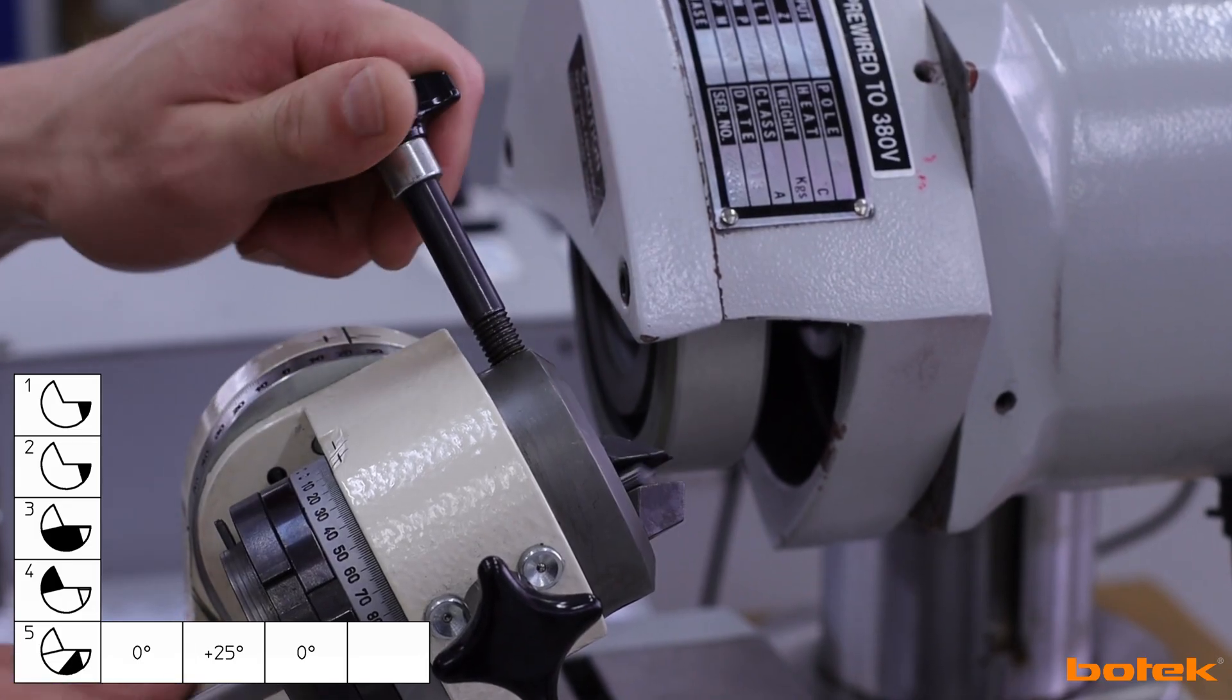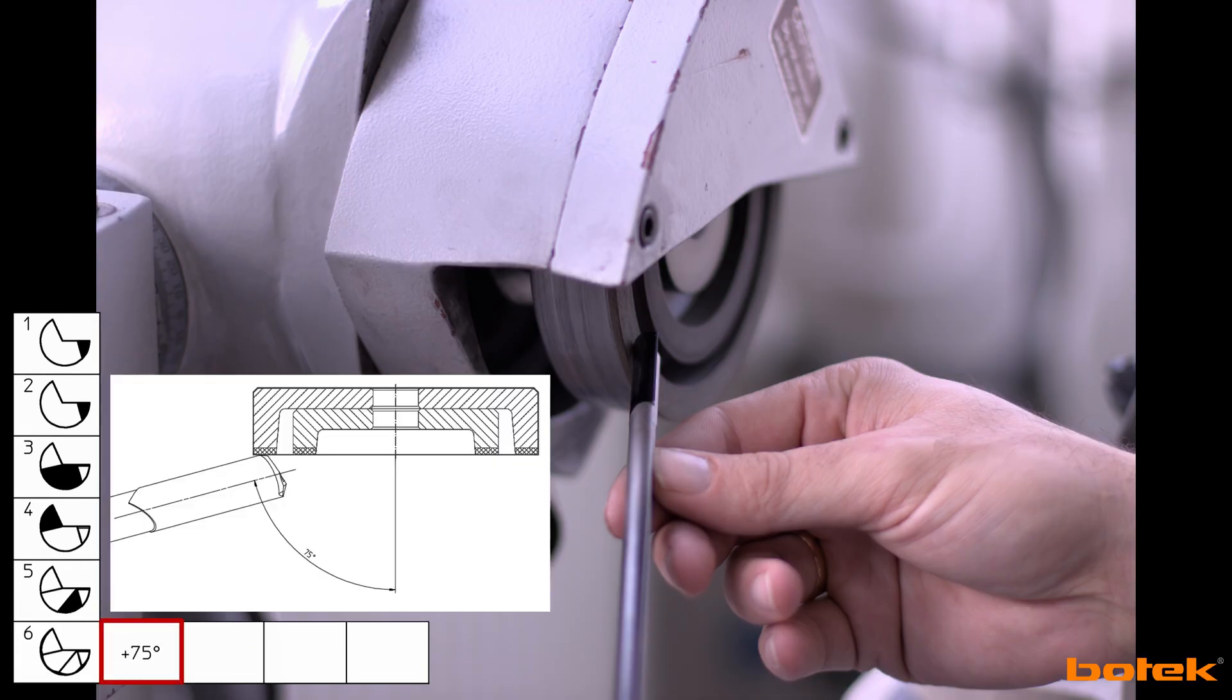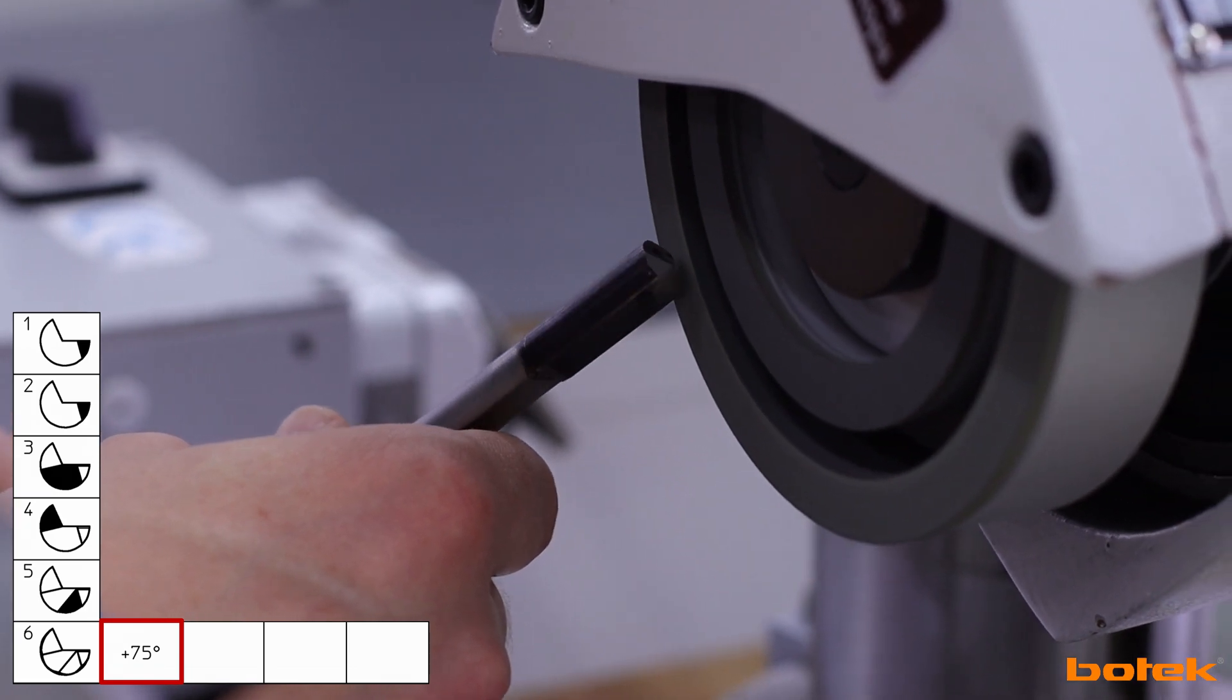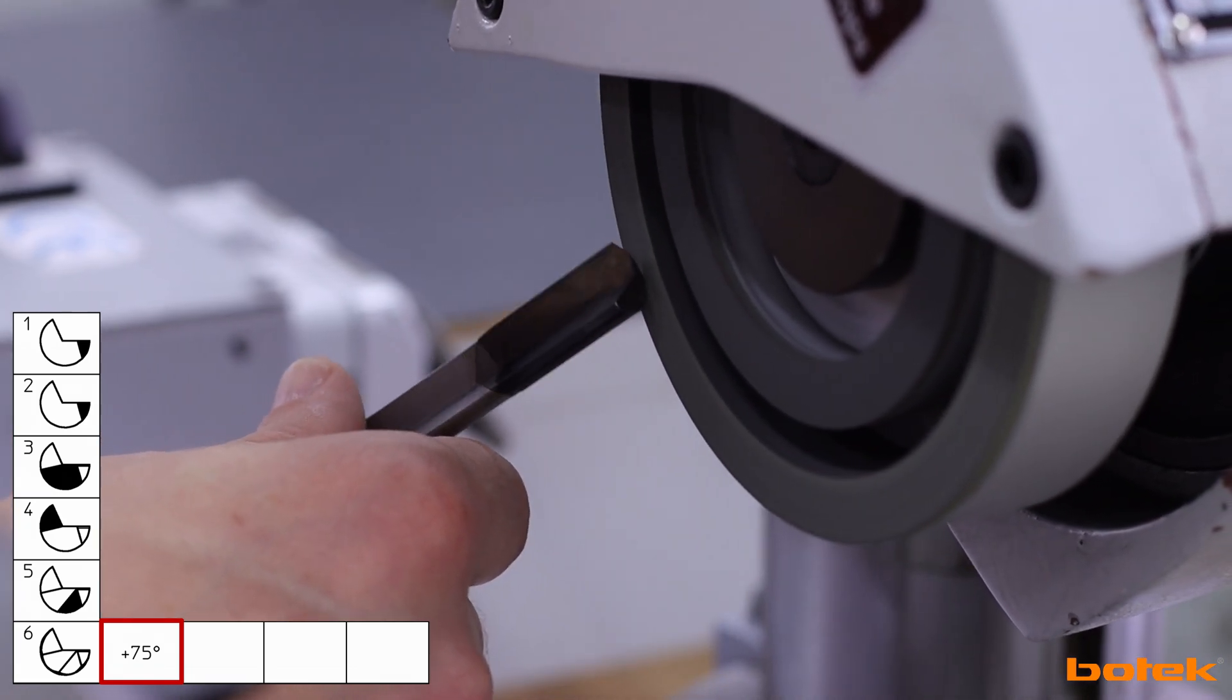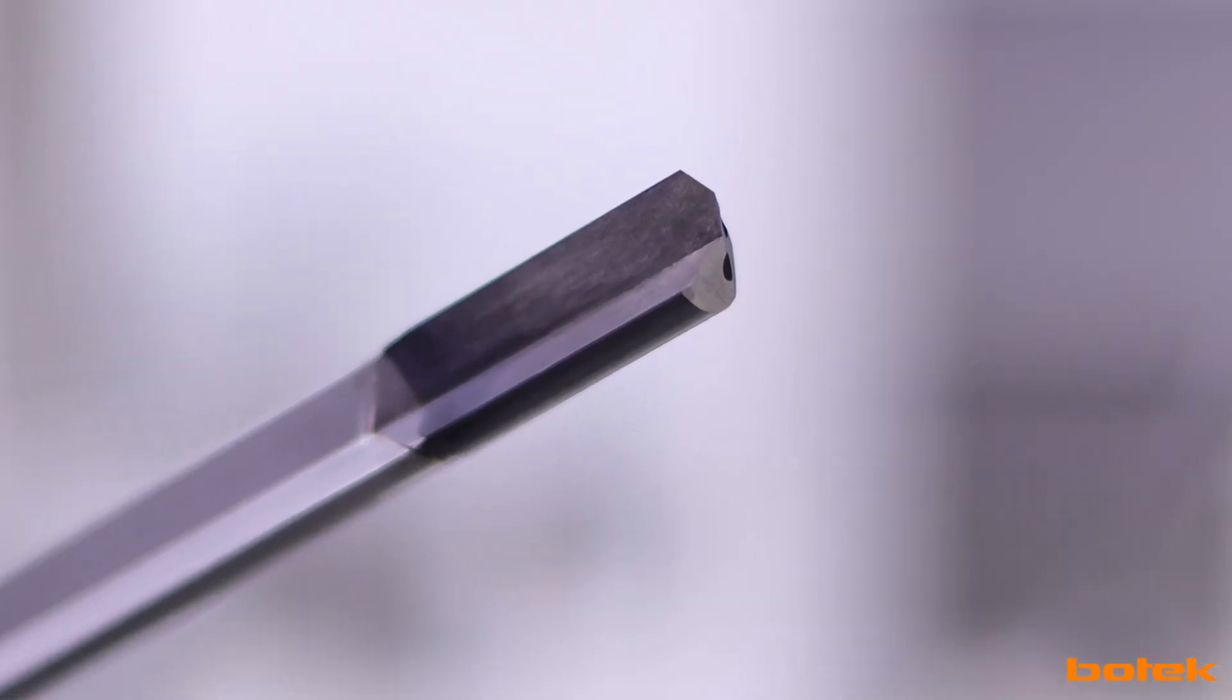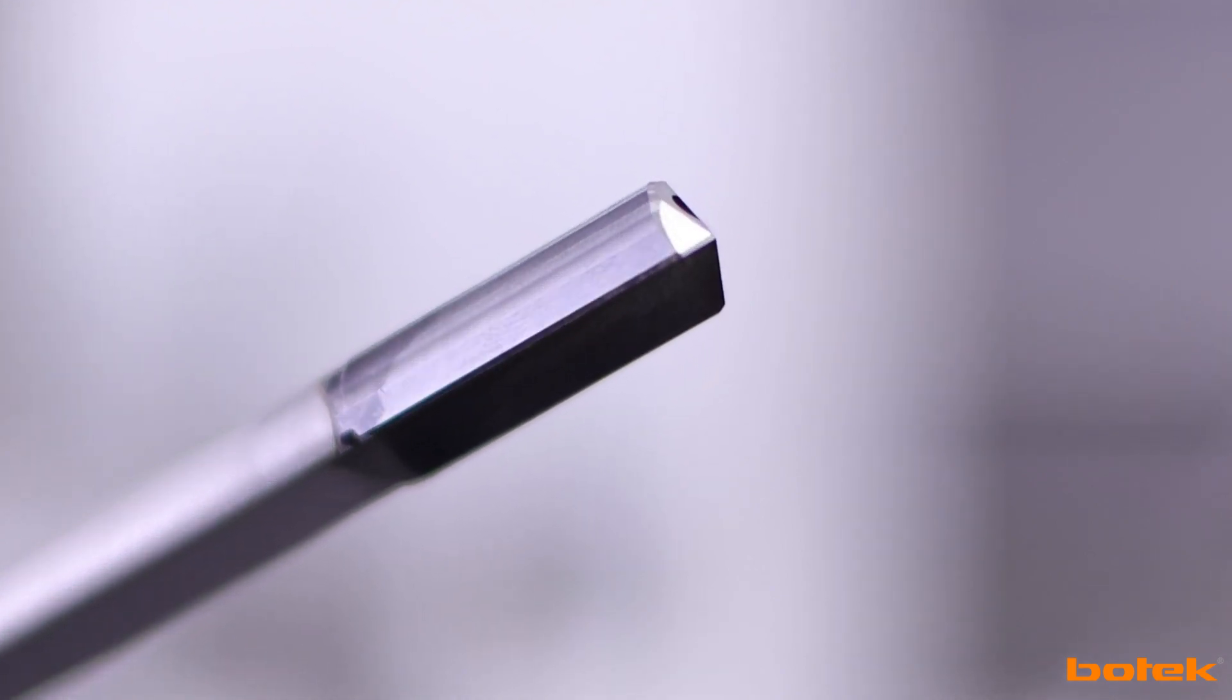Unclamp the tool for the last operation. Add a hand chamfer at plus 75 degrees starting at the oil chamfer along the circumference. Make sure that the cutting corner is not touched. The aim is to have the chamfer drop evenly around the tool.